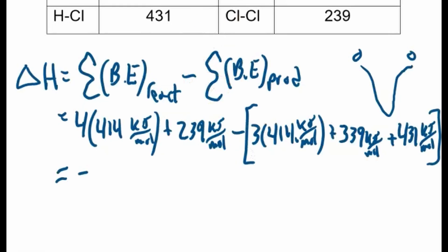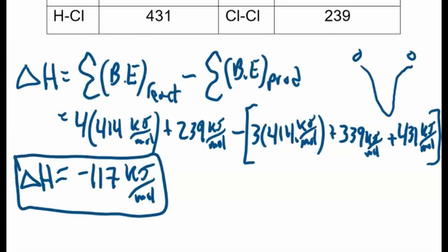So negative 117 kilojoules per mole. That's the heat of the reaction or the reaction enthalpy using bond energies.